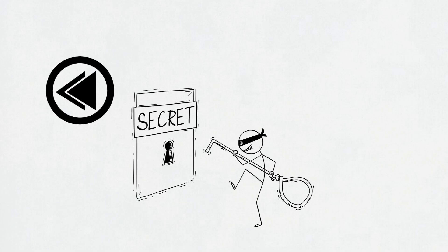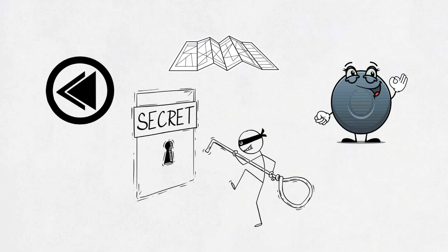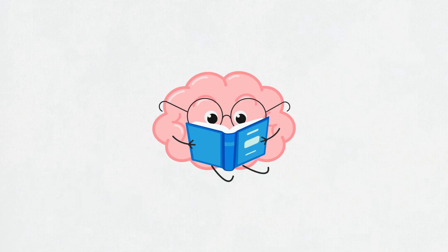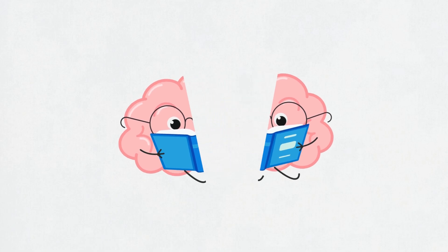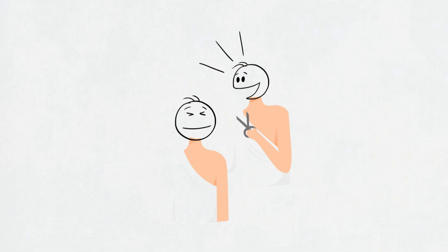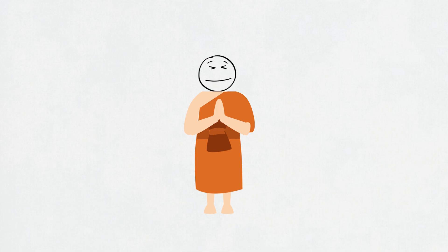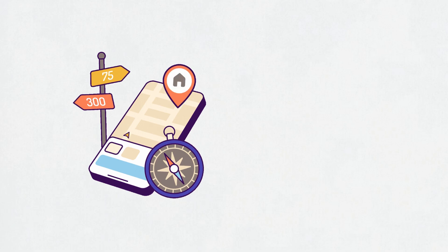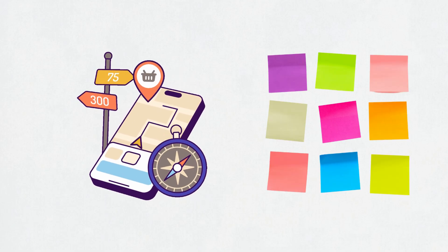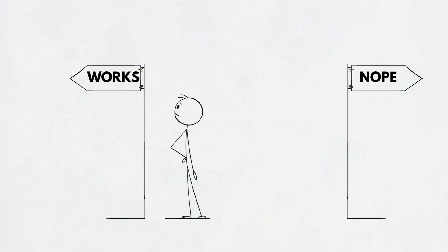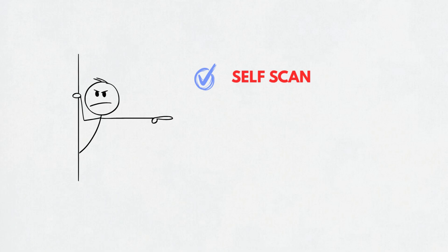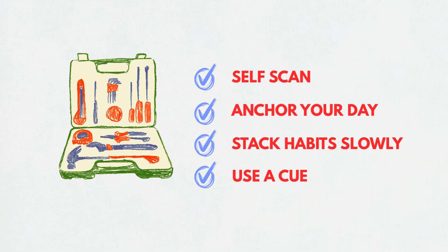So what now? Time to wrap this up like the end of a heist movie with a recap, a plan, and zero guilt. Chapter four, final steps with your toolkit. All right, you've learned what focus actually is, what breaks it, how to spot the warning signs, and how to build it back without shaving your head and becoming a monk. Now it's time to put it all together. You don't need to reinvent your entire personality. You don't need 47 productivity apps or a color-coded life. You just need to repeat what works, ditch what doesn't, and be a little nicer to your brain along the way.